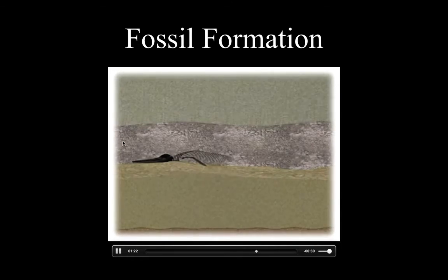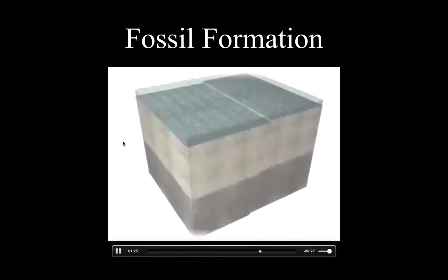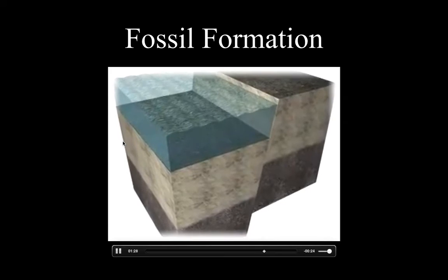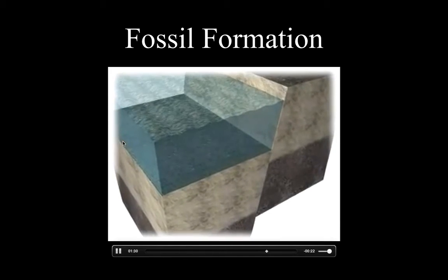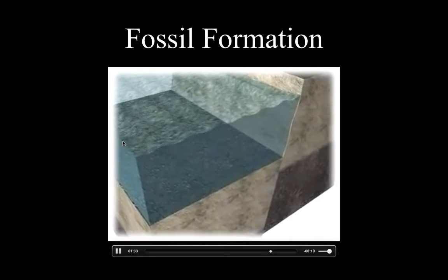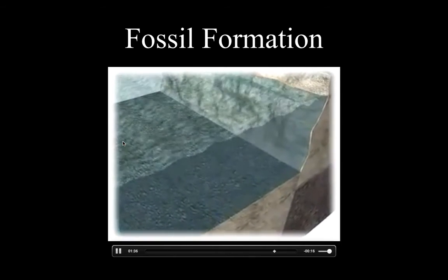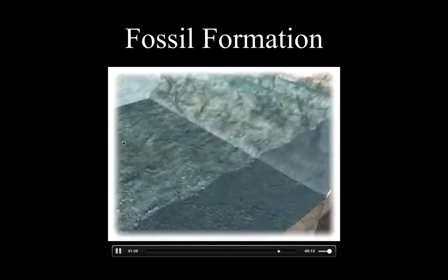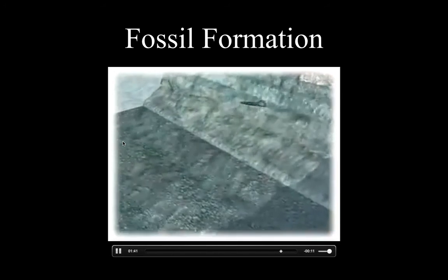How do we find the fossils? More weathering and erosion are going to uncover those parts. You can see right there there's a fault forming. The waves are crashing against the rock and eventually wearing it down to the point where that fossil material is showing.